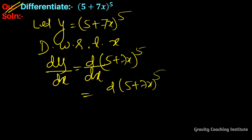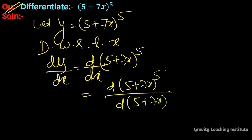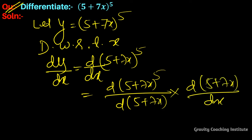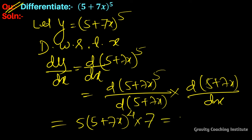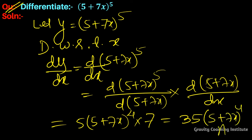Using the chain rule: dy/dx = 5·(5 + 7x)^(5-1) · d/dx(5 + 7x). Applying the x^n rule gives power 4. The constant 5 differentiates to 0, and derivative of 7x is 7. So the answer is 35·(5 + 7x)^4.